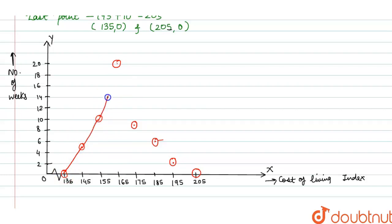This is the frequency polygon graph. Like this, connecting all the points. So we can say this is the frequency polygon graph. Thank you.